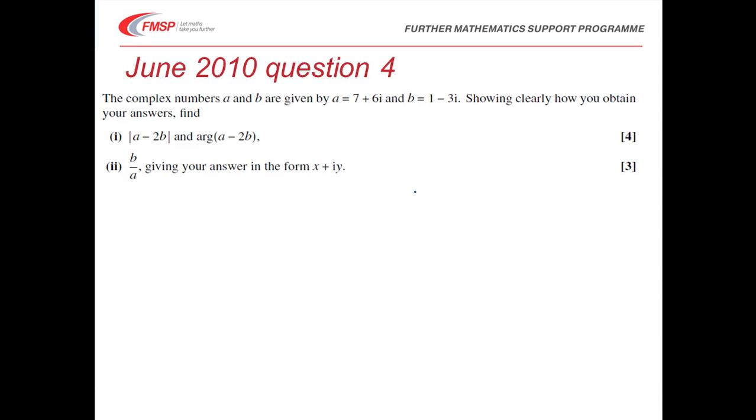It tells us that we've got two complex numbers A and B. A is 7 plus 6i, B is 1 minus 3i. It says showing clearly how you obtain your answers find. In part 1 we have the modulus of A minus 2b and the argument of A minus 2b. And then in part 2 it asks us to find B divided by A, giving our answer in the form x plus iy.